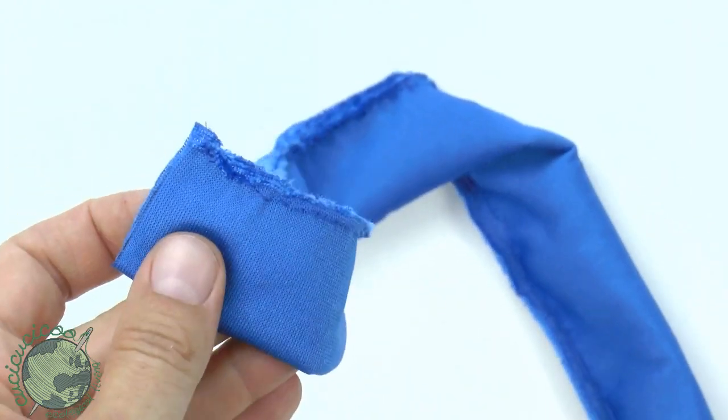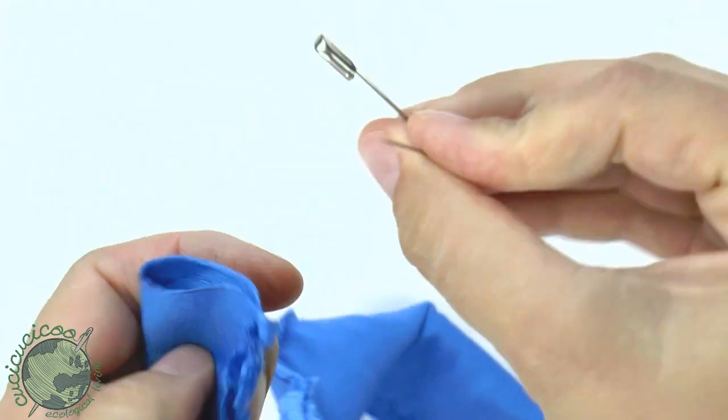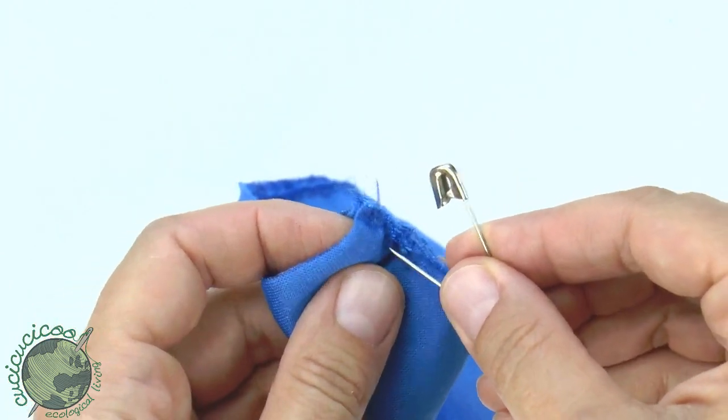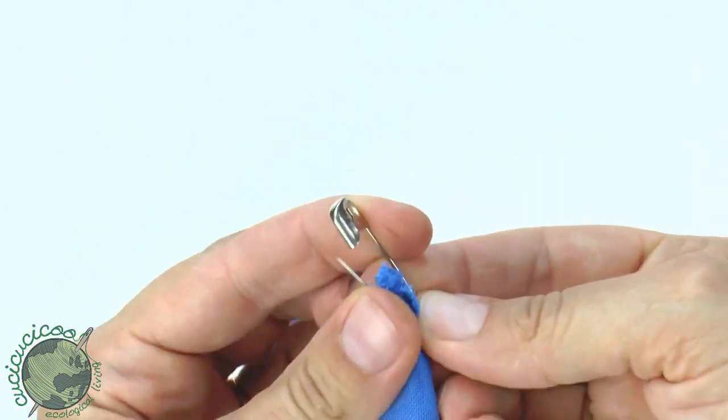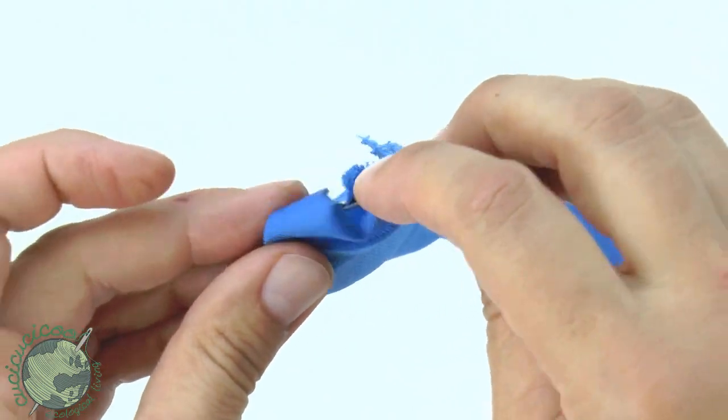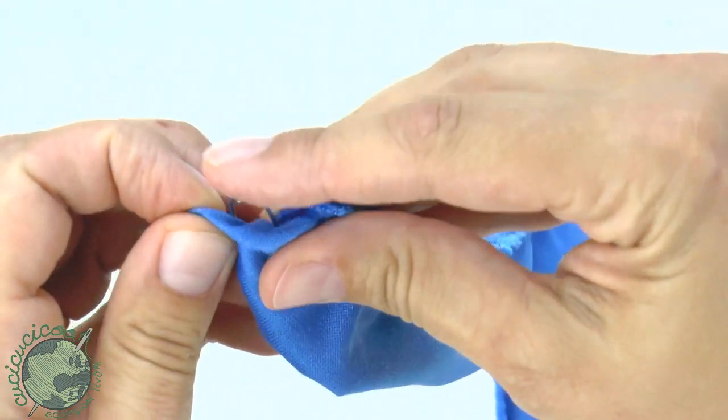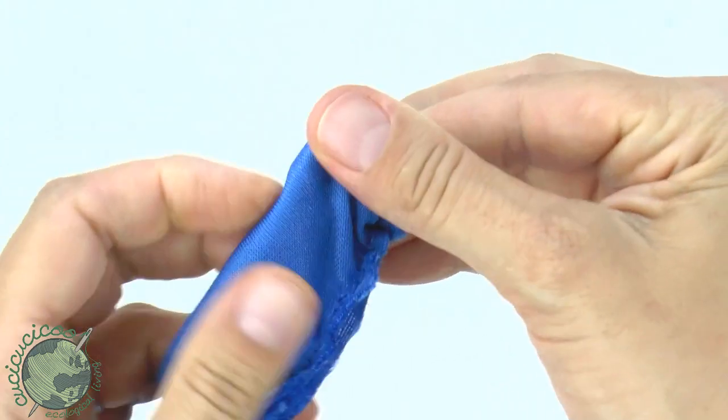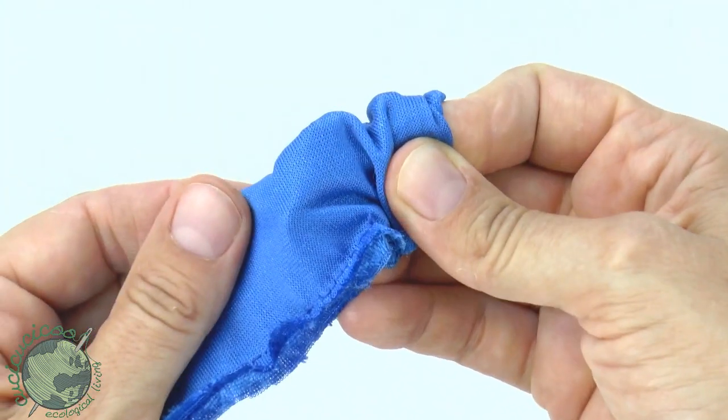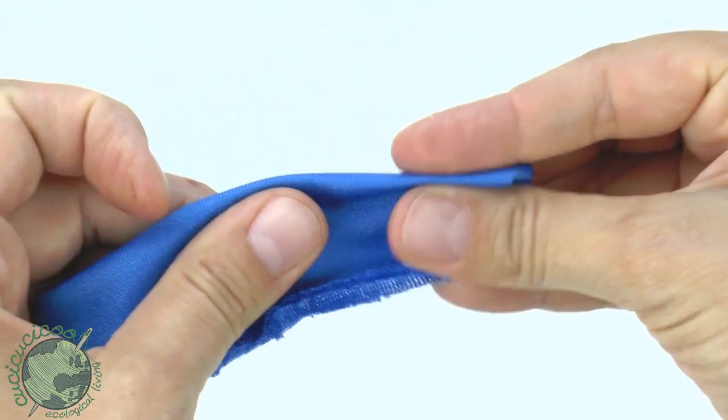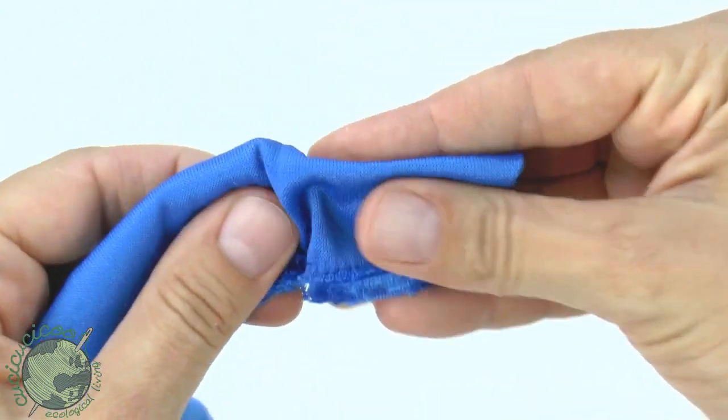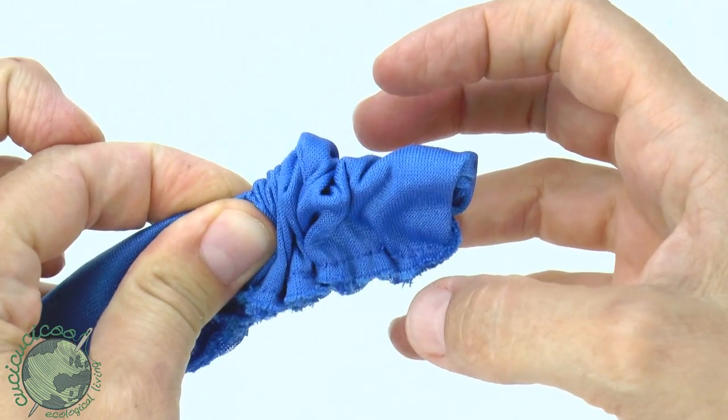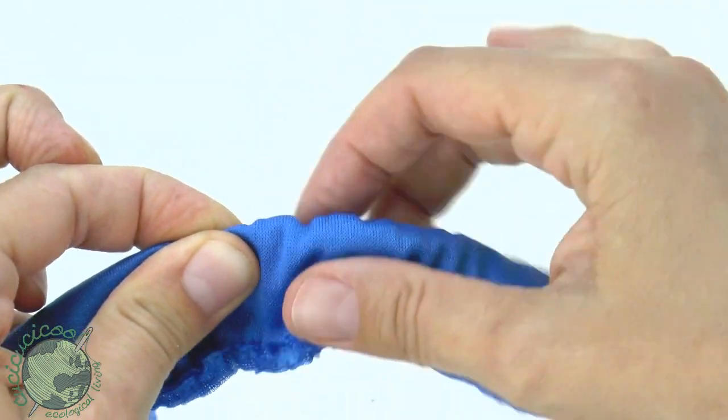Now we need to turn it right side out. So to be able to do that we're going to use a safety pin. Use a medium sized safety pin. Poke it into the seam allowance because here it's a little bit more sturdy. That way you don't risk ripping by accident the fabric. So stick the safety pin right inside the tube like that. Push it through with your finger and you can feel it from the inside. There it is, it's poking out.